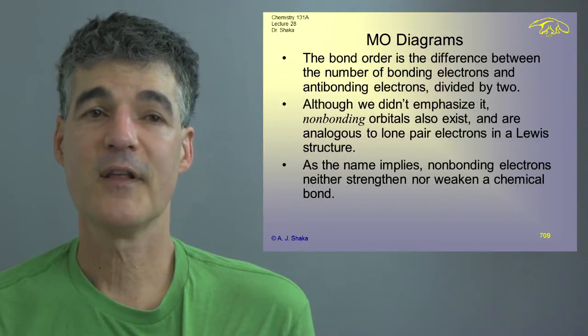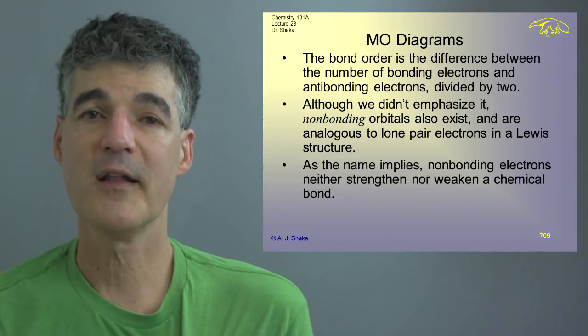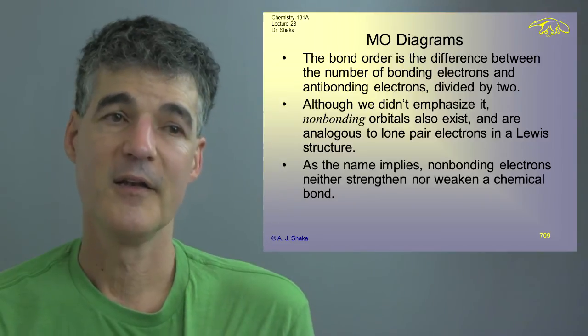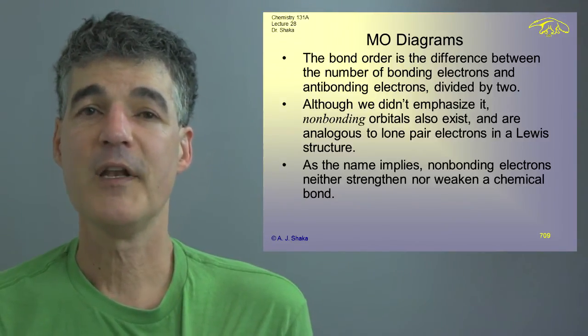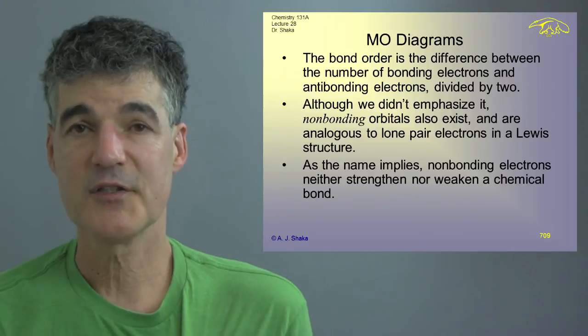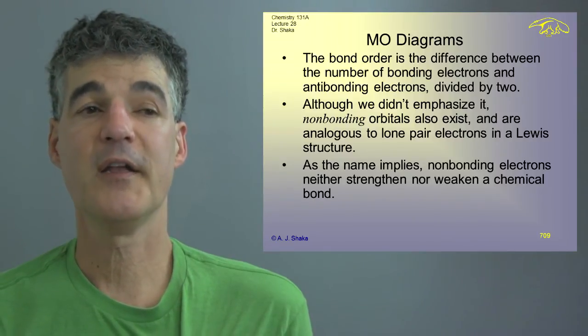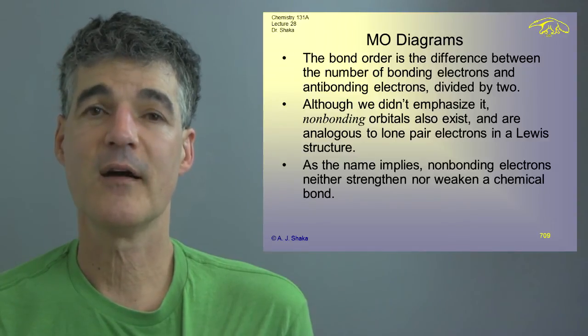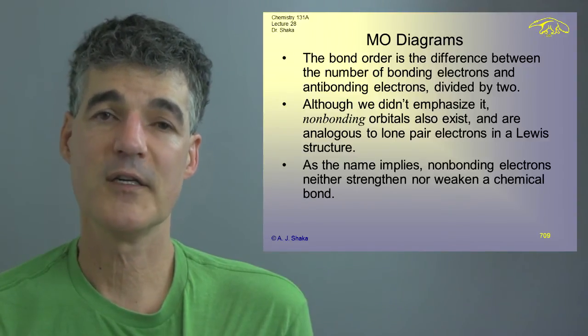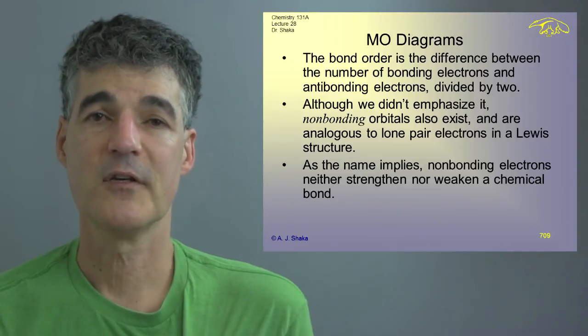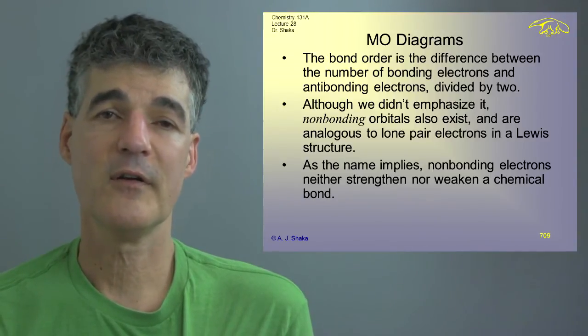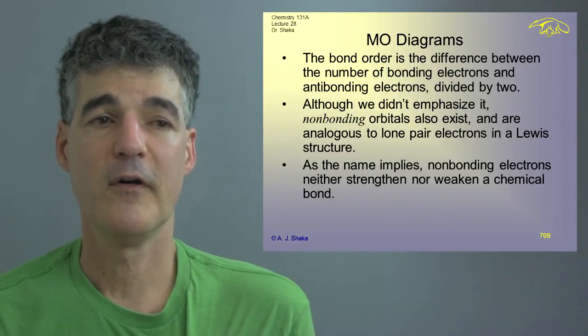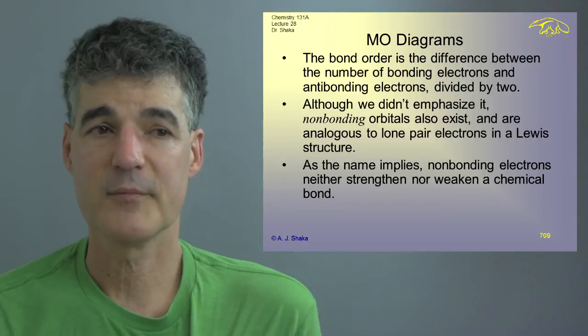Then we had this thing. The bond order is the difference between the number of bonding electrons minus the number of antibonding electrons divided by 2. And although we didn't emphasize it much, there are nonbonding electrons, nonbonding orbitals. And those usually are sort of like what you would draw as lone pairs on a Lewis structure. And so they neither hurt nor help you. They aren't really involved in the active part of the structure holding the atoms together.